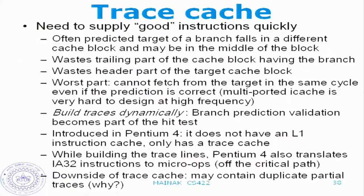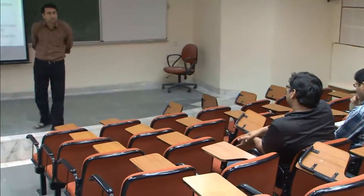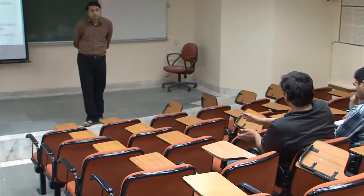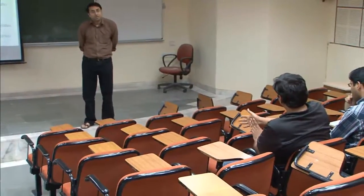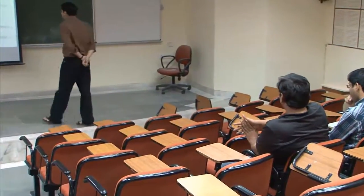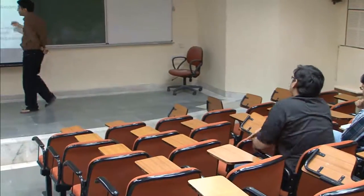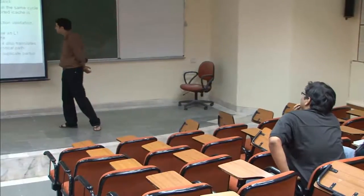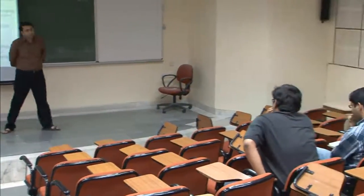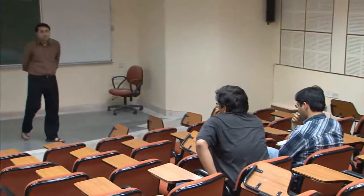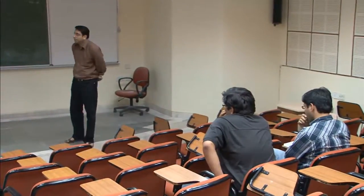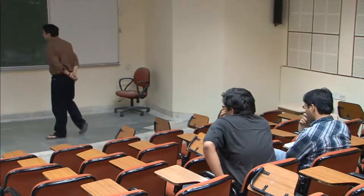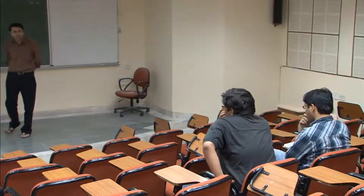If you want to delve deeper into trace cache or the exact architecture of the Pentium 4 trace cache, let me know and I can give you a paper. A student asked: when is the trace cache looked up? The answer is at fetch time — at the instruction cache. If it misses in the trace cache, only then the instruction cache would be accessed. Interestingly, Pentium 4 did not have an L1 instruction cache — it would access L2 cache directly. Regarding self-modified code, the traces would have to be flushed out of the cache.